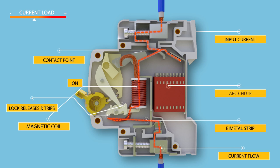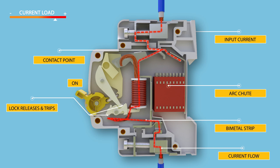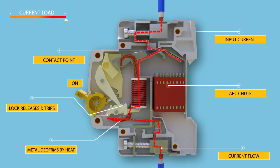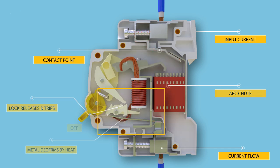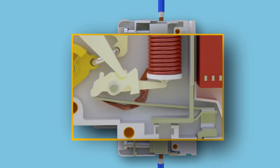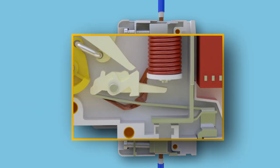This deflection further releases the trip latch and the contacts get separated. The visual indication of this trip can be observed by the automatic movement of the operator to the off position. During tripping operations, an arc is formed when the contacts start separating. This arc is then forced into arc chute plates, where it is split into a series of arcs, and at the same time energy is extracted and cooled.